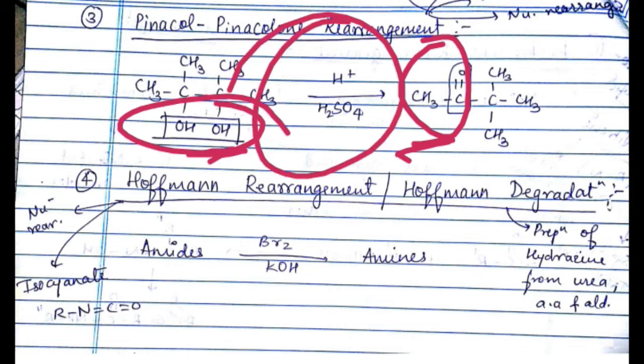Carbocation is intermediate. Catalyst required is acid and it also undergoes nucleophilic rearrangement reaction.